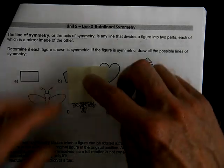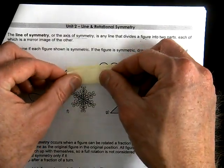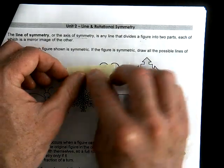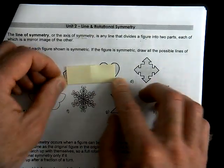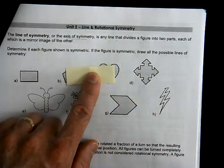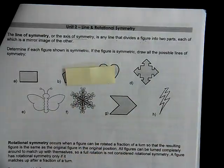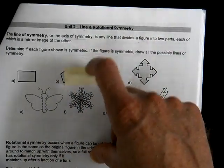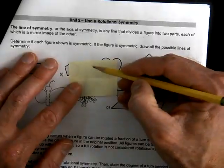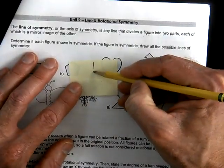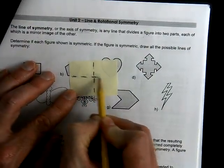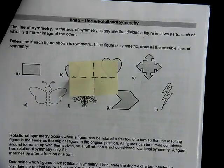You could fold this so that it's hot dog style — the long way. The vertices match up, the sides match up, so that's another line of reflection. So we have a line of reflection that goes this way and a line of reflection that goes that way, for a rectangle.